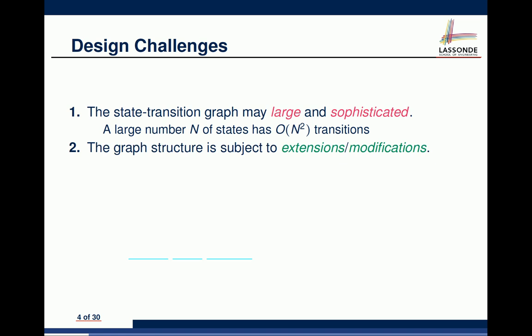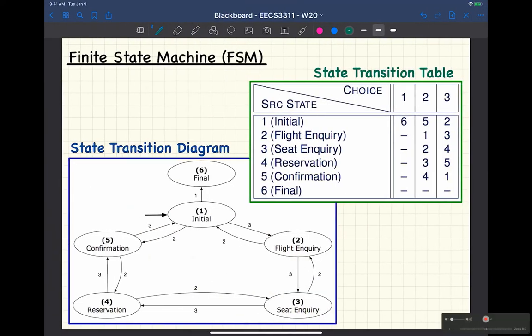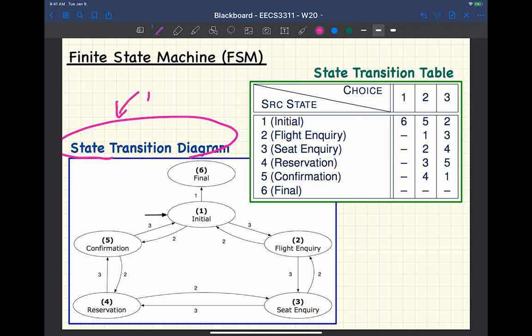This is the state transition diagram — I'm sure every one of you knows it, given that you've already passed COMP 2001. This is more like the model of your system. This is the so-called transition table — you've seen that as well. The transition table is reflected in your diagram, but it's a representation closer to implementation. How would you turn the transition table into implementation? What kind of data structure would you need? A two-dimensional array.